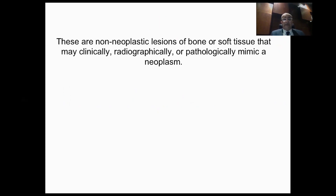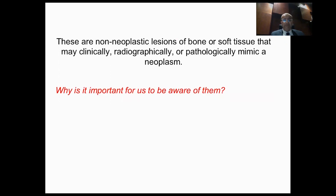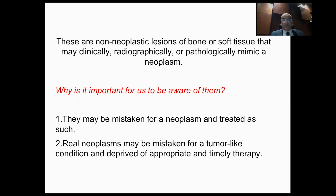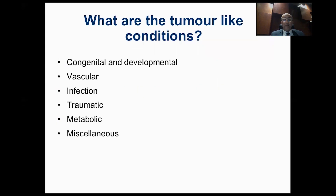The definition is as follows: they are non-neoplastic lesions of bone and soft tissues that may clinically, radiographically, or pathologically mimic a neoplasm. It's important to be aware of them for two reasons — they could be mistaken for a neoplasm and treated as a tumor, or vice versa, a real neoplasm may be mistaken for a tumor-like condition and deprived of appropriate and timely therapy.